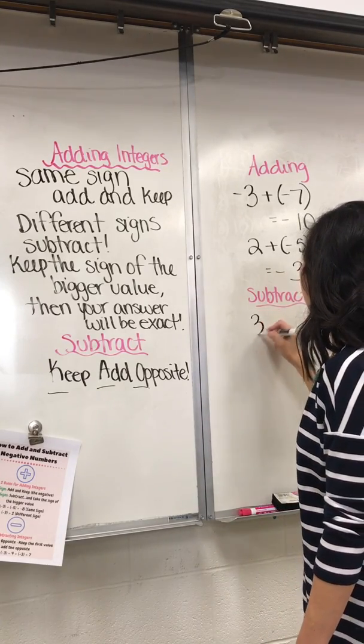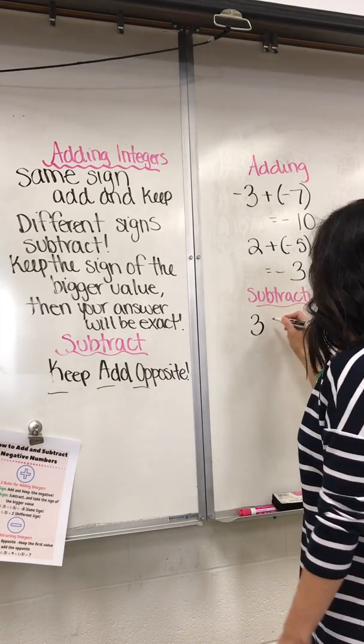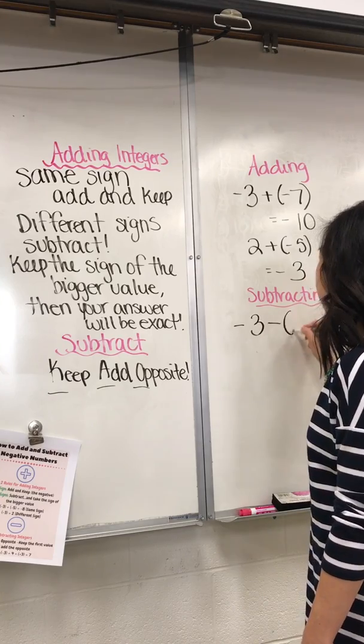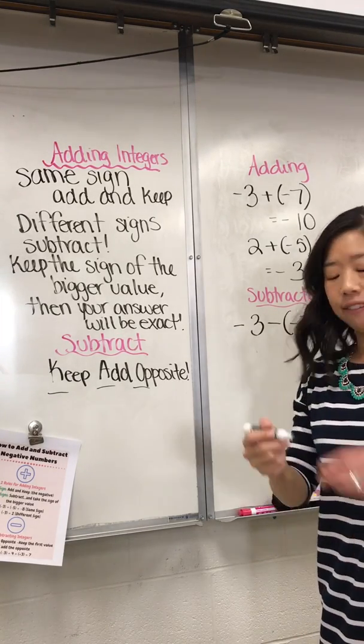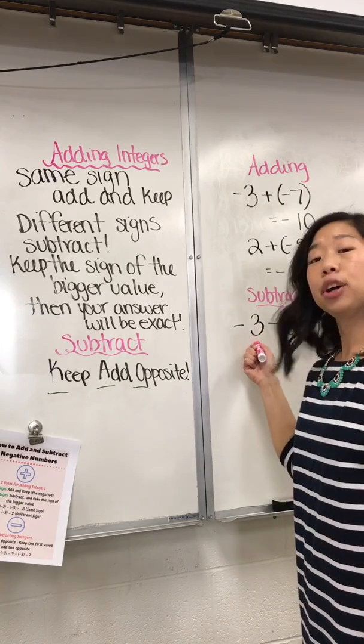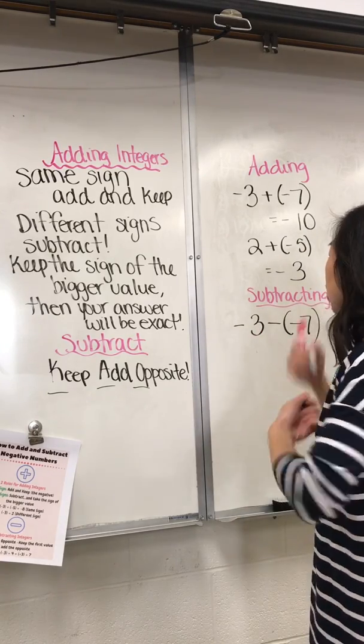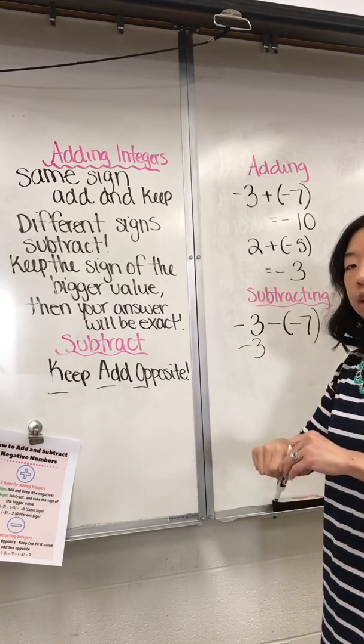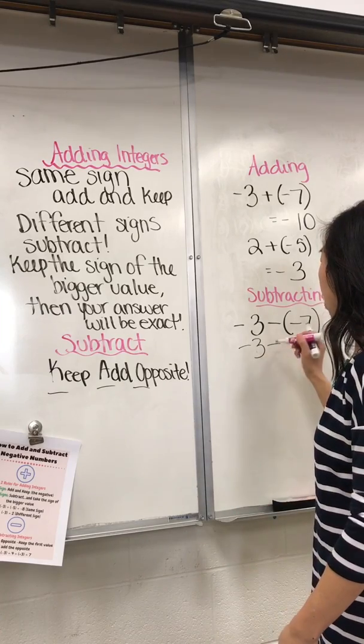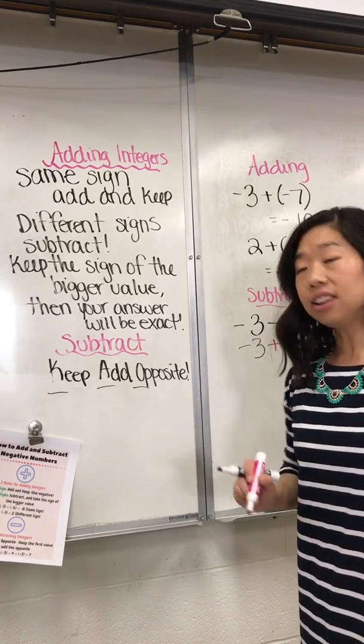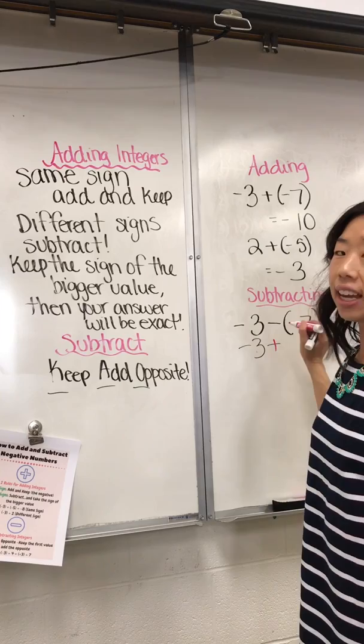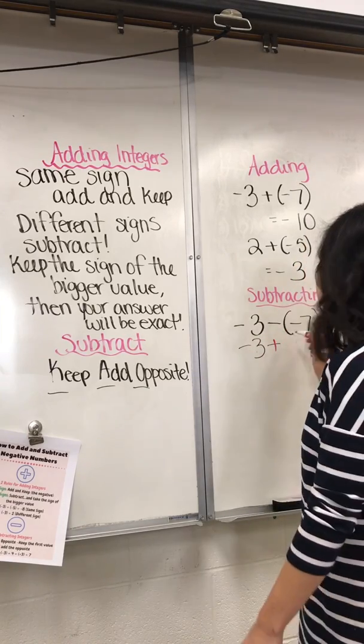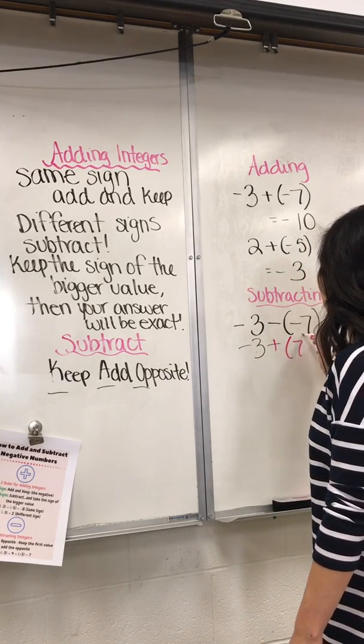If you have something like negative three minus negative seven, you are going to keep your front number the same. We're going to keep this negative three. We are going to change our subtract to an add. And then we're going to take our negative seven and make it opposite. So it's going to turn into positive seven.